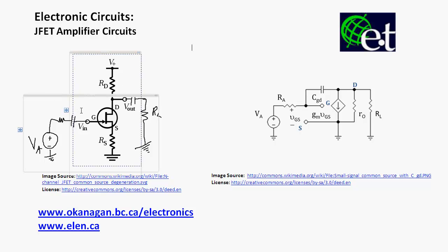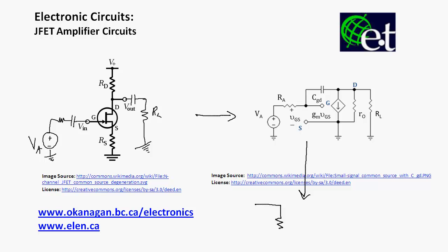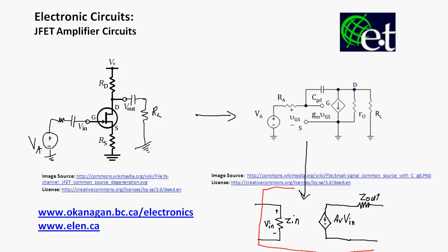What that's going to involve is taking circuits that look something like this one, converting them into a small signal model form, and then converting them into a two-port model where I have an input impedance over which the input voltage will be applied, a voltage gain, and an output impedance. Everything inside the red box is the two-port amplifier configuration we're going to derive — expressions for Zin, AV, and Zout.